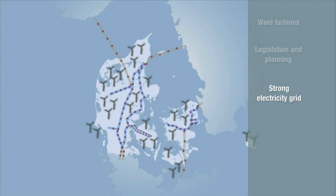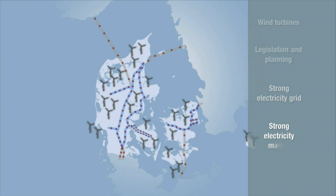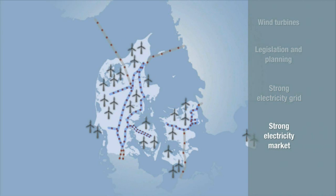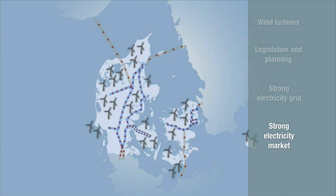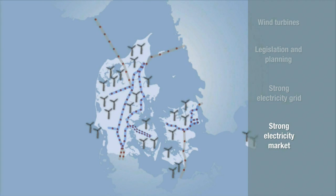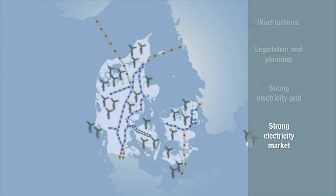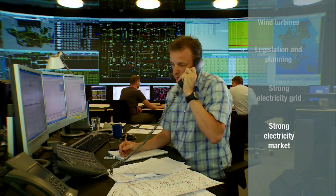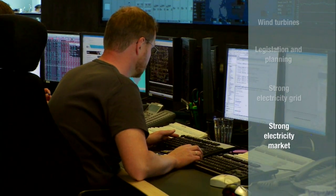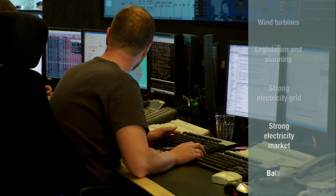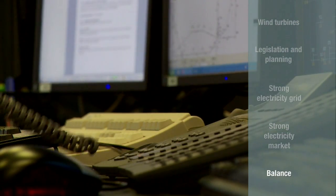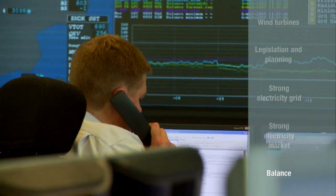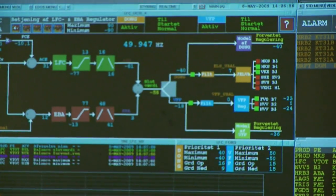Denmark is part of a strong electricity market where electricity can be bought and sold, all in all to accommodate supply and demand and to ensure competitive and fair prices for electricity. A national transmission system operator ensures that the actual generation of electricity and its actual consumption always balance, by asking the power stations to step on the brakes, or to step on the accelerator, or through import and export to neighboring countries.